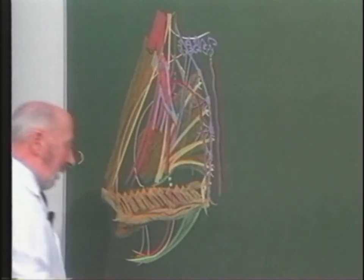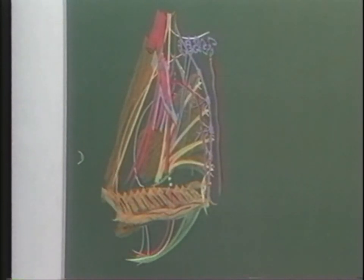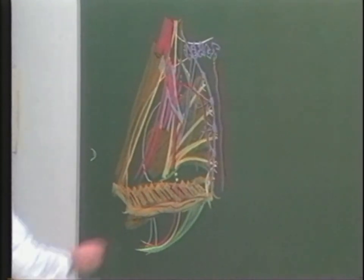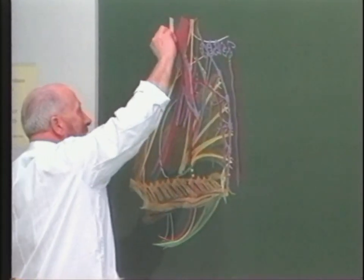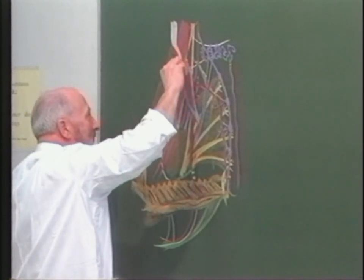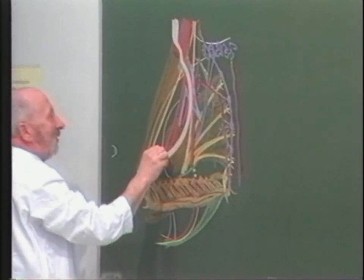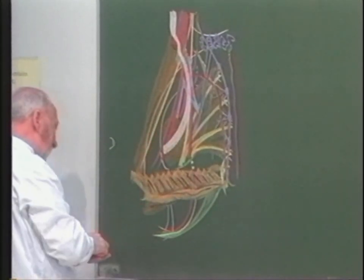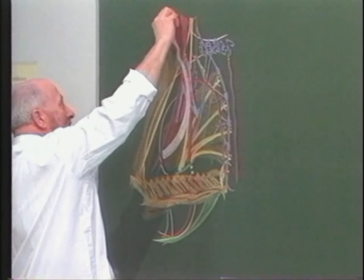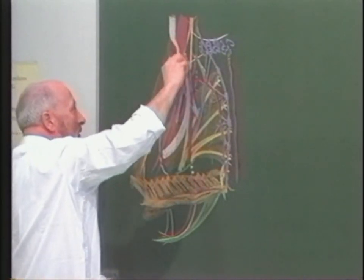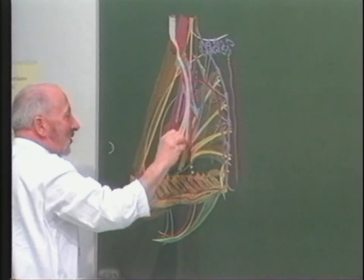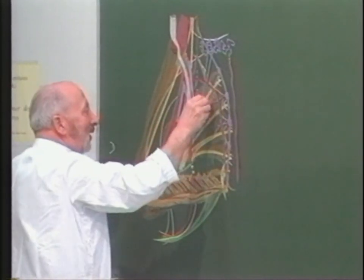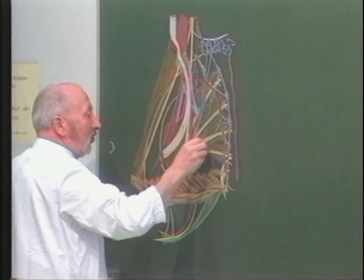Les éléments nerveux végétatifs vont passer en dedans du contingent vasculaire artériel et veineux. Voilà, en quelque sorte, la toile de fond de l'espace latéro-pariétal qui mène à la zone fessière, quand on aura encore mis en place l'uretère qui, après la fissure marginale de Schwalb, va dessiner sa concavité antérieure, l'amenant à s'aboucher à la face postérieure de la vessie. Voilà des rapports pariétaux latéraux qui méritaient d'être rappelés, compte tenu de leur importance, lors de la dissection du mésorectum.